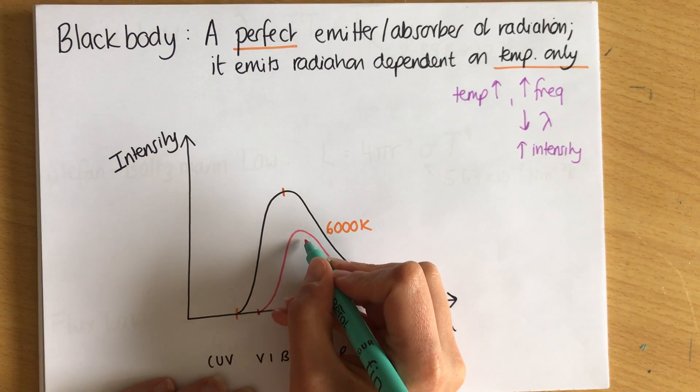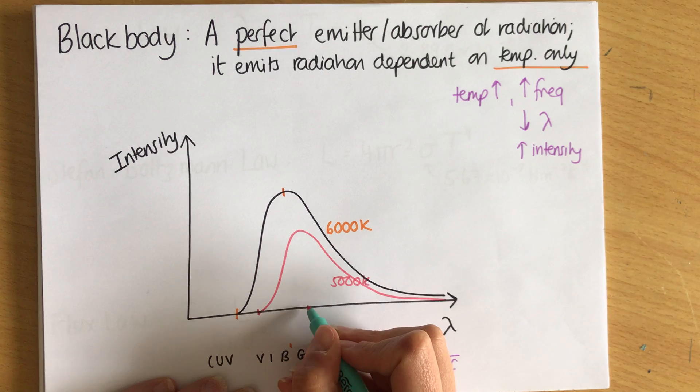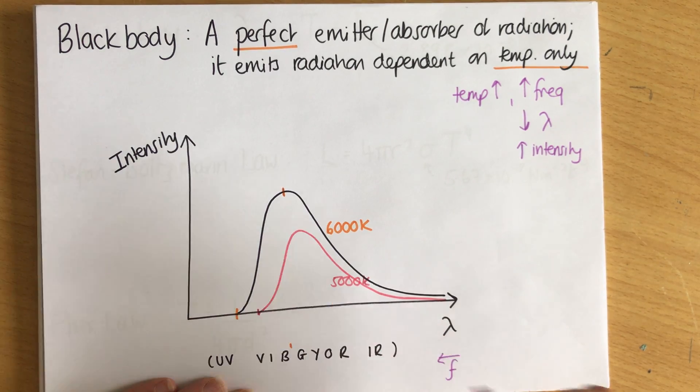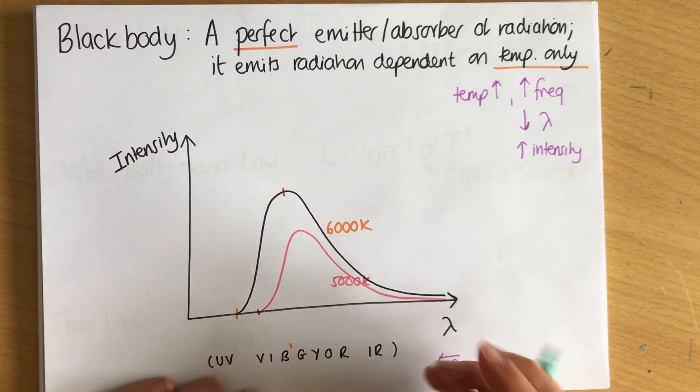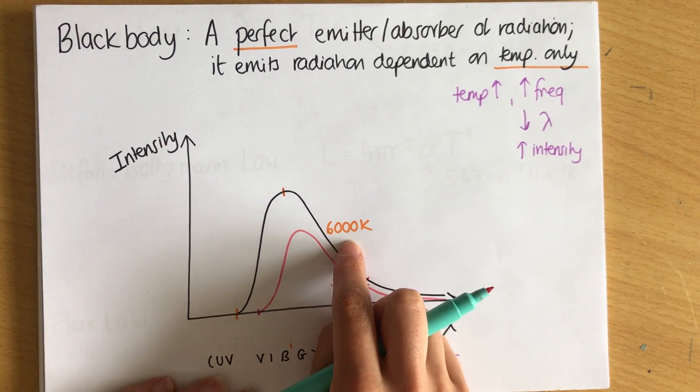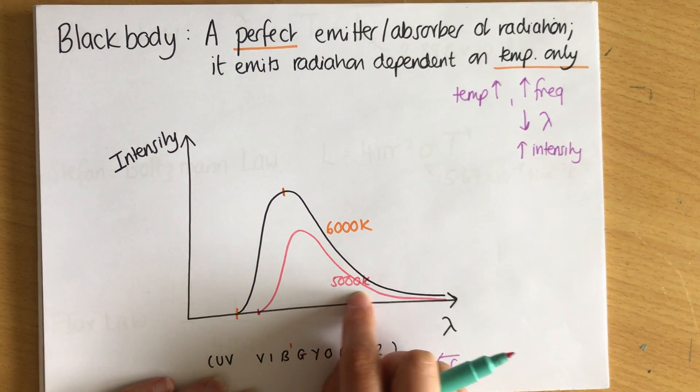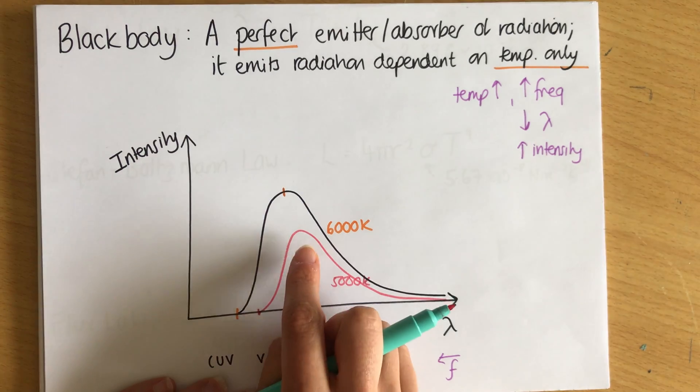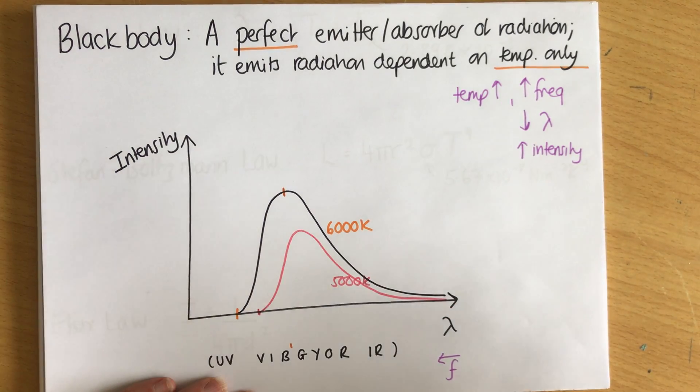And we can see here the peak now is more over the green-yellow section. So this star wouldn't look as white, it would look more yellowy. And to be fair, this is probably more like 6,000 Kelvin and this is more like 7,000 Kelvin, but we'll get past that. So this star would look more yellow and less white, because yellow is colder than a white-hot.